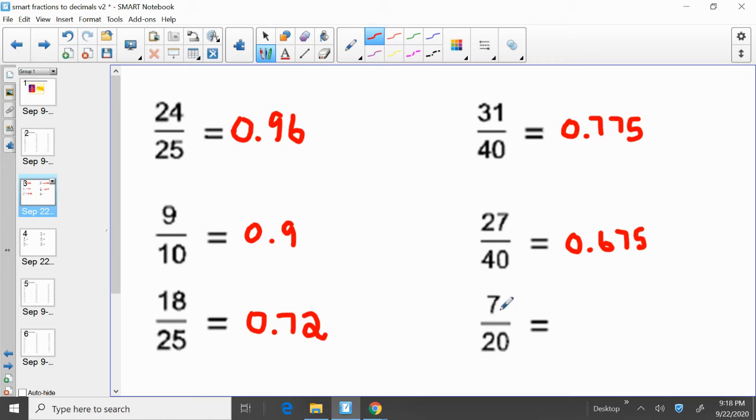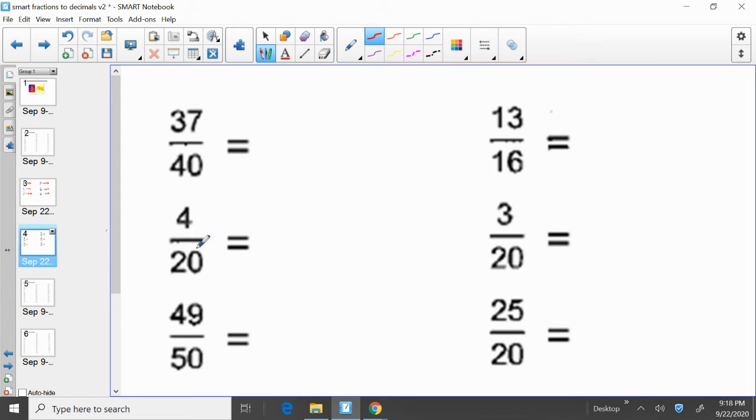Moving on to the last one on this page, seven twentieths, seven over twenty. Seven divided by twenty equals zero point three five. And again, it's very easy. We're just taking the numerator, dividing it by the denominator in each example. Looking at the next page.